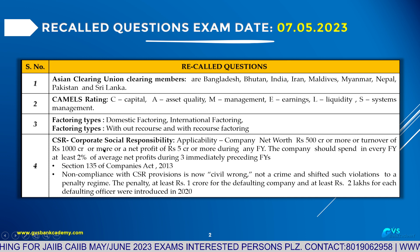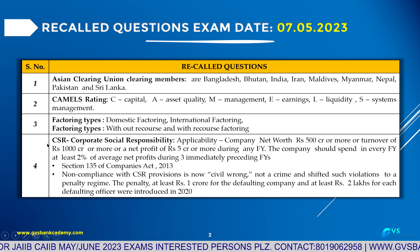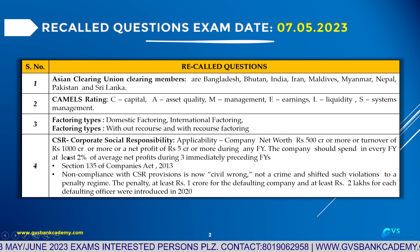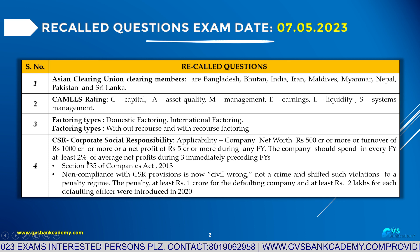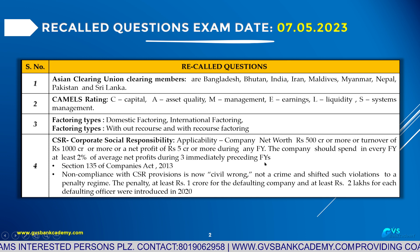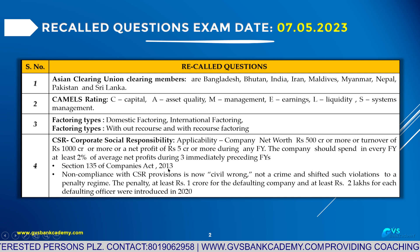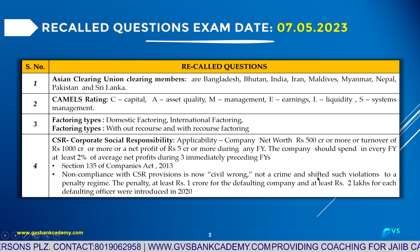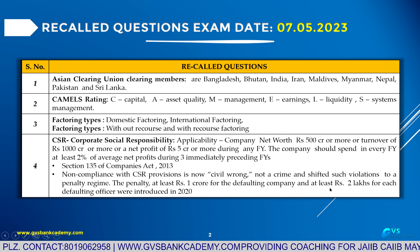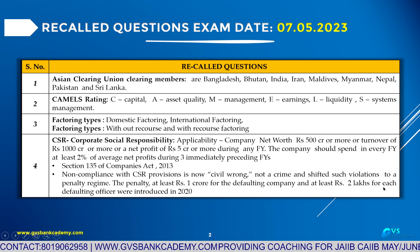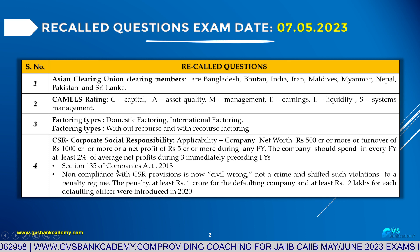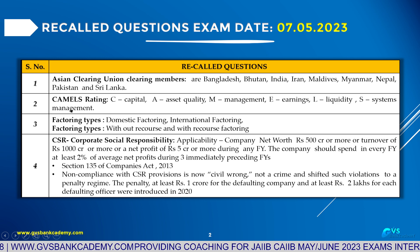Question number four — this is very important in all JAB and CAB papers. CSR: Net worth applicable to company — net worth 500 crores or more; turnover 1000 crores or more; net profit 5 crores or more. The company must spend every year at least 2% of the average net profit during three preceding financial years. This is under Section 135 of the Companies Act 2013. Non-compliance with CSR provisions is now a civil wrong, not a criminal one. Penalty against the company: 1 crore; penalty against officers: 2 lakh for each defaulting officer.